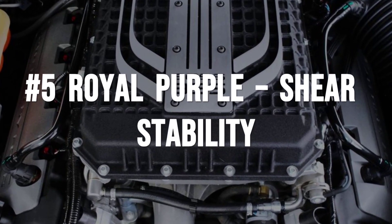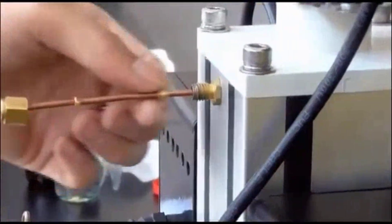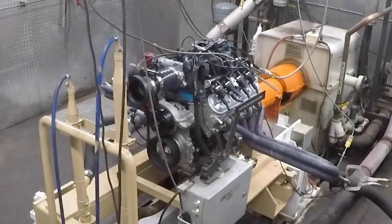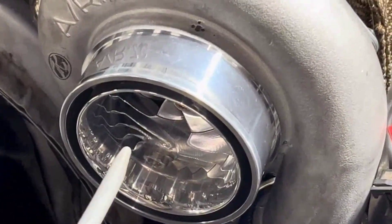Royal Purple high performance enters the top five for one simple reason: it holds its ground when others thin out. In the lab, this oil endures repeated high temperature shear cycles designed to mimic the relentless pounding inside modern engines.